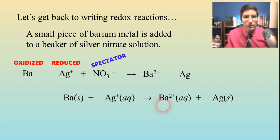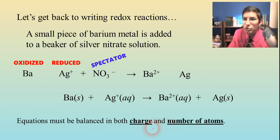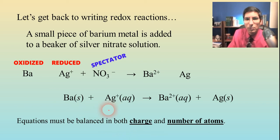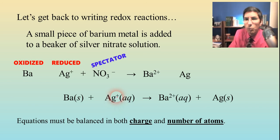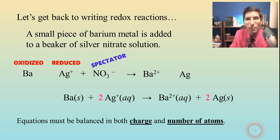You might notice this is not balanced because equations have to be balanced both in charge and number of atoms. The number of atoms looks good — one barium and one silver on both sides — but the charge is off. We have +1 on the left and +2 on the right. We balance the charge by putting a two in front of silver, and now we have an overall balanced equation.